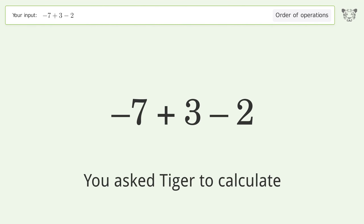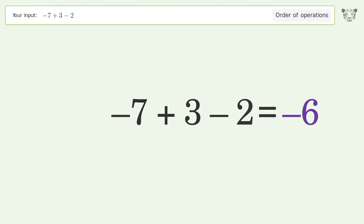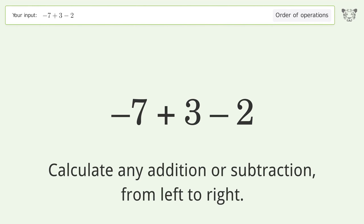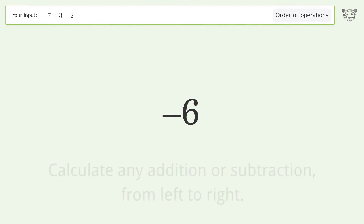You asked to calculate this. It deals with the order of operations. The final result is negative six. Let's solve it step by step. Calculate any addition or subtraction from left to right: negative seven plus three equals negative four, negative four minus two equals negative six. And so the final result is negative six.